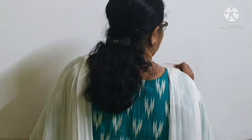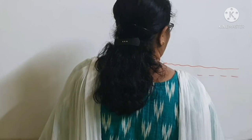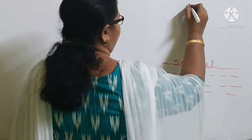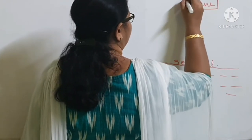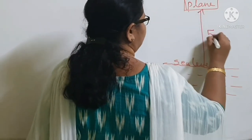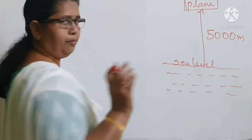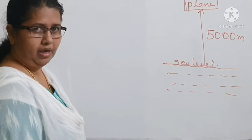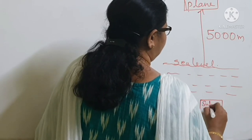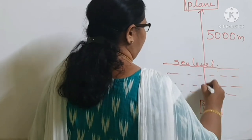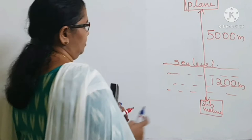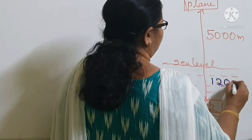We have the sea level, and the plane is flying at a height of 5000 meters above the sea level — so, 5000 meters. At a particular point, the plane is exactly above a submarine floating 1200 meters below sea level — submarine floating 1200 meters below sea level.